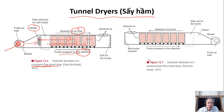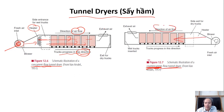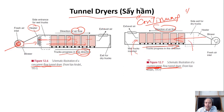This is called co-current flow tunnel dryer because the direction of the air and the direction of the food is the same. There is also another design called counter-current flow tunnel dryer, where the air is moving in one direction but the food is moving in the opposite direction. This is a kind of continuous drying.